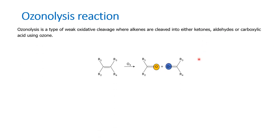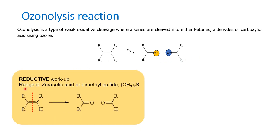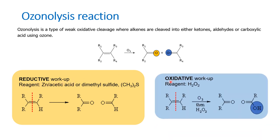Ozonolysis is an oxidative cleavage of an alkene — alkenes are cleaved to form carbonyl compounds. If both R groups on the alkene are alkyl-substituted, we get a ketone. If one R group is a hydrogen, we get an aldehyde. All alkenes on ozonolysis give carbonyl compounds. This ozonolysis can happen by two workup methods: reductive workup, and oxidative workup. In reductive workup the reagent commonly used is zinc/acetic acid or dimethyl sulfide.